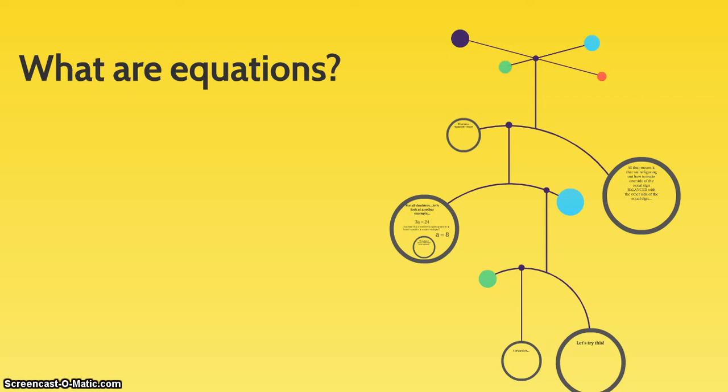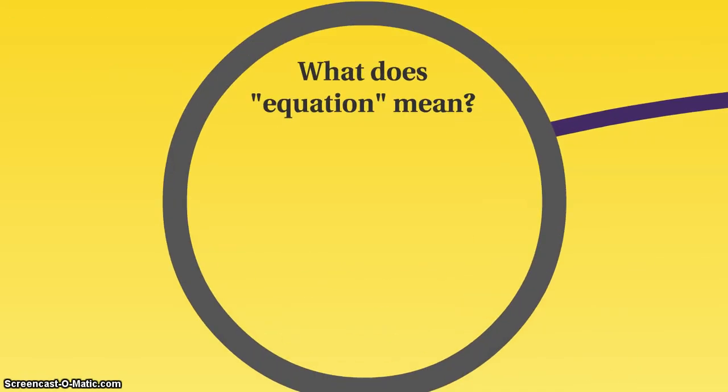Just to sort of ease into this, we're going to define some things. So the first thing we're going to define, what are equations? Because that sounds like a scary algebra word, right? It simply means a statement that says two amounts are equal. So you have an equal sign and whatever you're doing on one side of the equal sign has to be equal to the other side of the equal sign. That's all it means. You're finding a balance between these two sides.